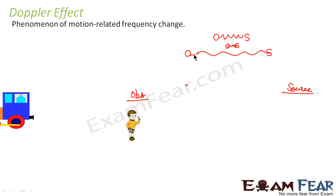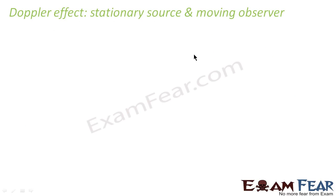Now we will discuss two scenarios. In the first scenario, we will consider that the observer is stationary and the source is moving. In the second scenario, we will consider that the source is stationary and the observer is moving. We will find an expression to describe how the frequency changes as this motion takes place. In the first scenario we talk about a stationary observer and a moving source.